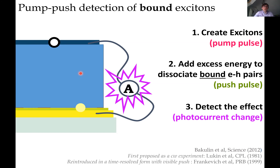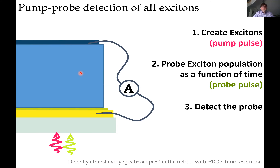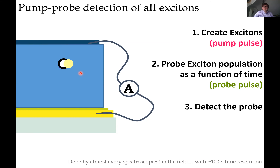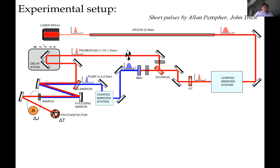If our state would eventually dissociate by itself, infrared light will not increase the device current — we'd get current anyway. So this technique selectively observes only bound excitons at moments when the exciton is already bound. The other technique is the standard pump-probe, where we create an exciton with one pulse and monitor absorption with another, seeing the exciton population as a function of time. We built a setup that can simultaneously do pump-push and pump-probe on devices at exactly the same conditions.